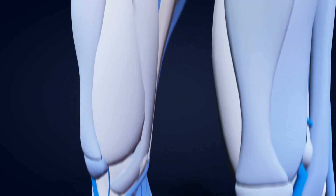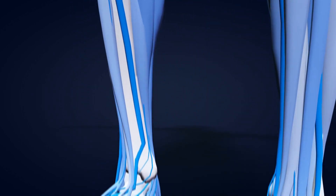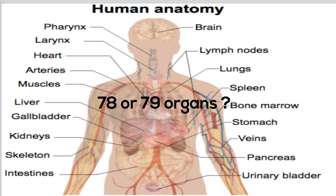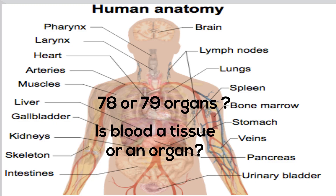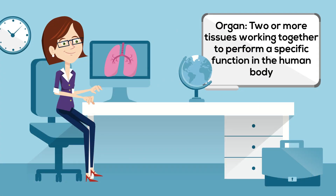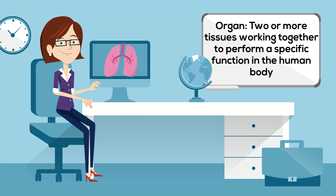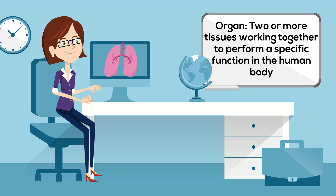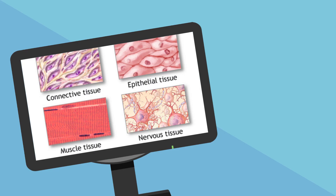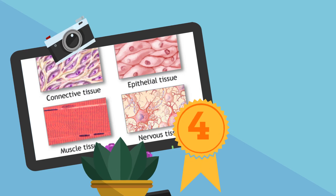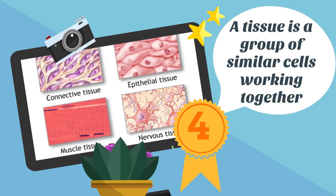Since there is no single standard definition of what an organ is, the number of organs varies depending on how one defines an organ. For this video, I'm defining an organ as two or more tissues working together to perform a specific function in the human body. A tissue is a group of similar cells working together.